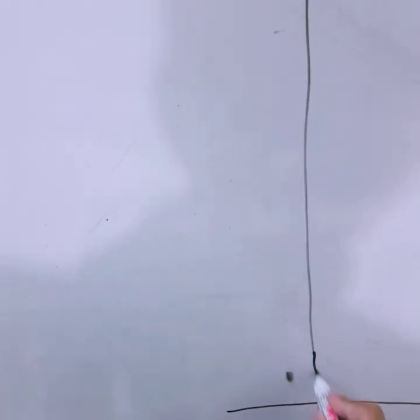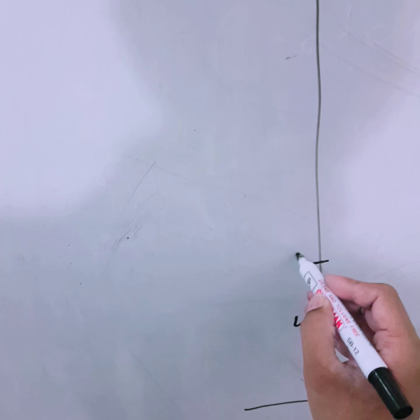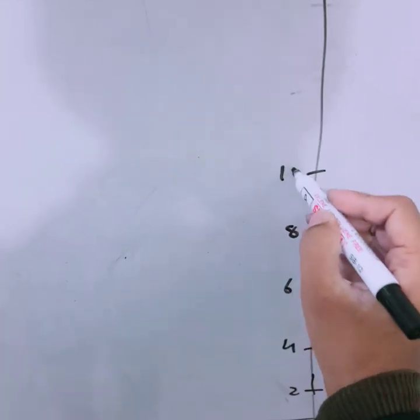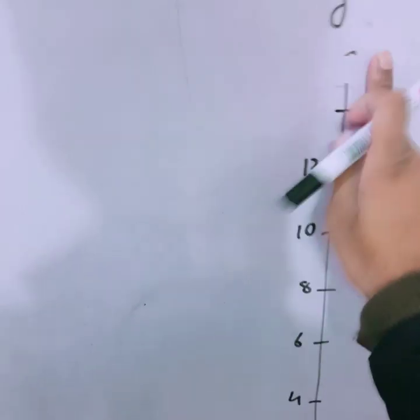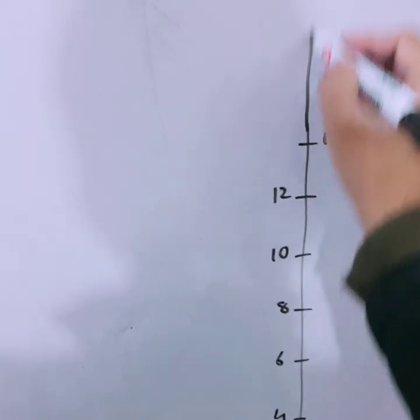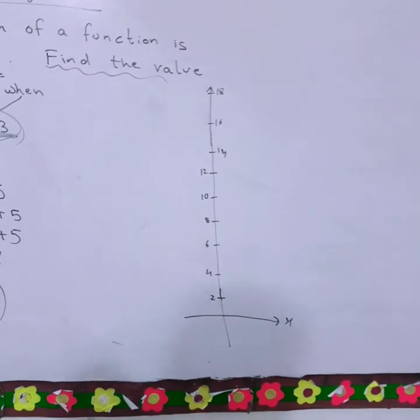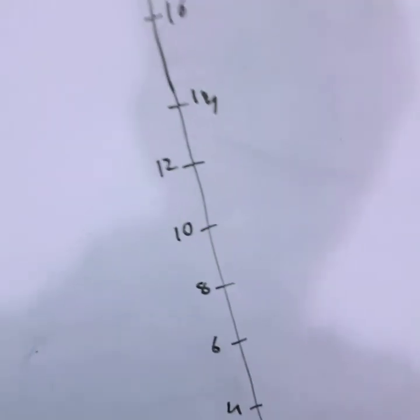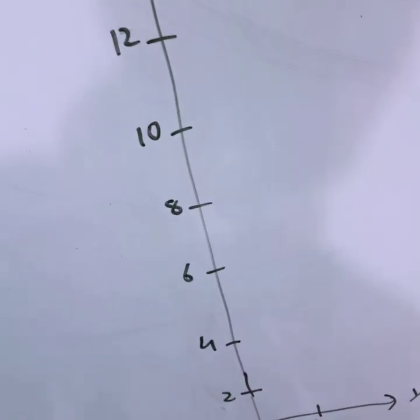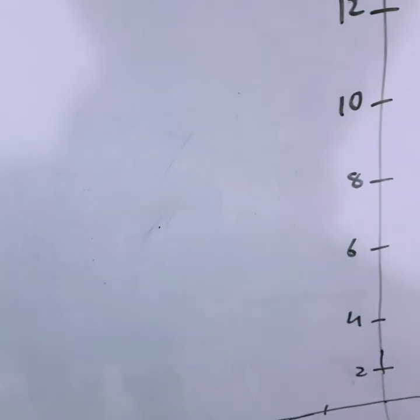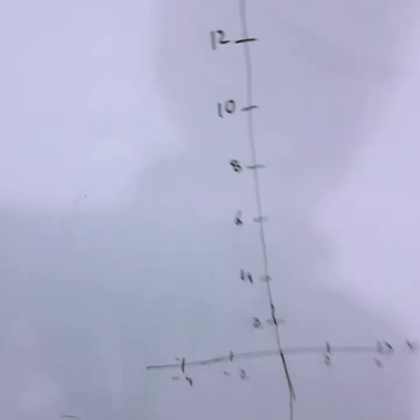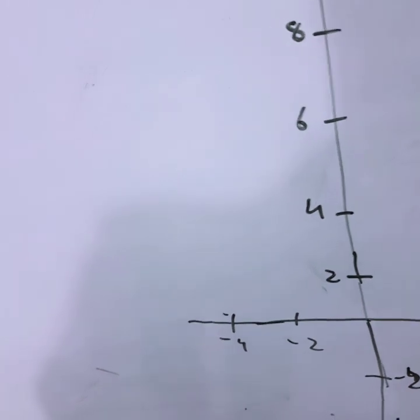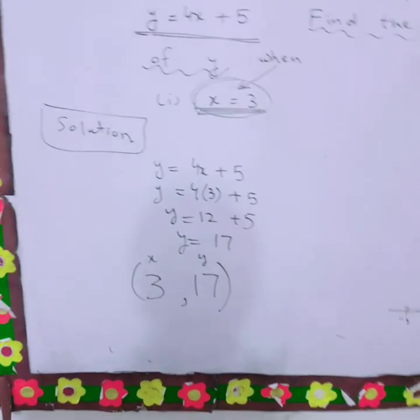You can give gaps of 2 on the y-axis: 2, 4, 6, 8, 10, 12, 14, 16, and 18. Similarly, with the same gap, draw values of x: positive 2, positive 4, and negative values minus 2, minus 4. On the negative y side, draw minus 2 and minus 4.